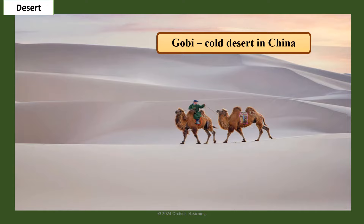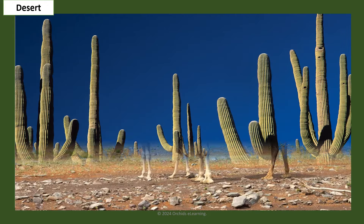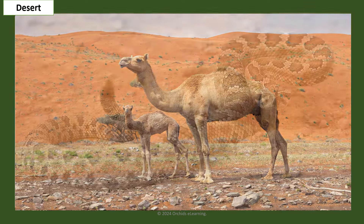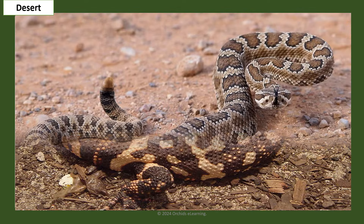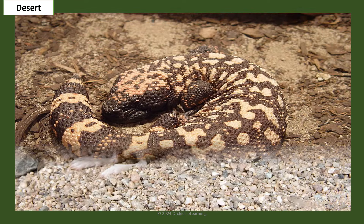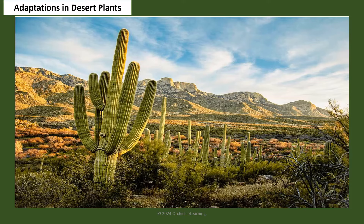Organisms found in deserts include cactus, camel, rattlesnake, Gila monster, and kangaroo rat.